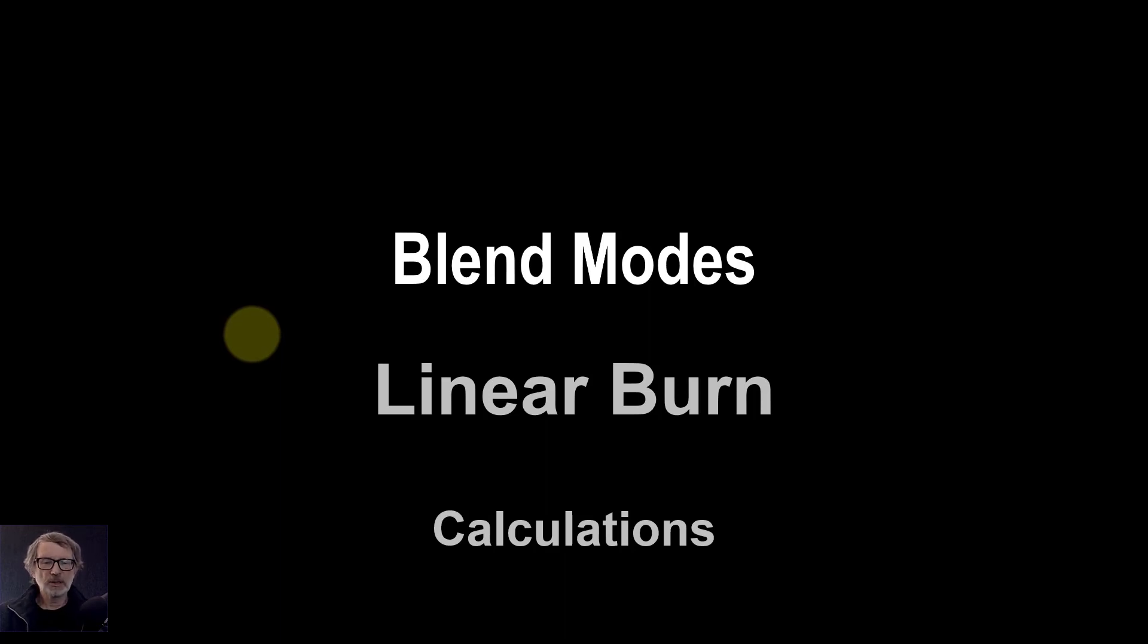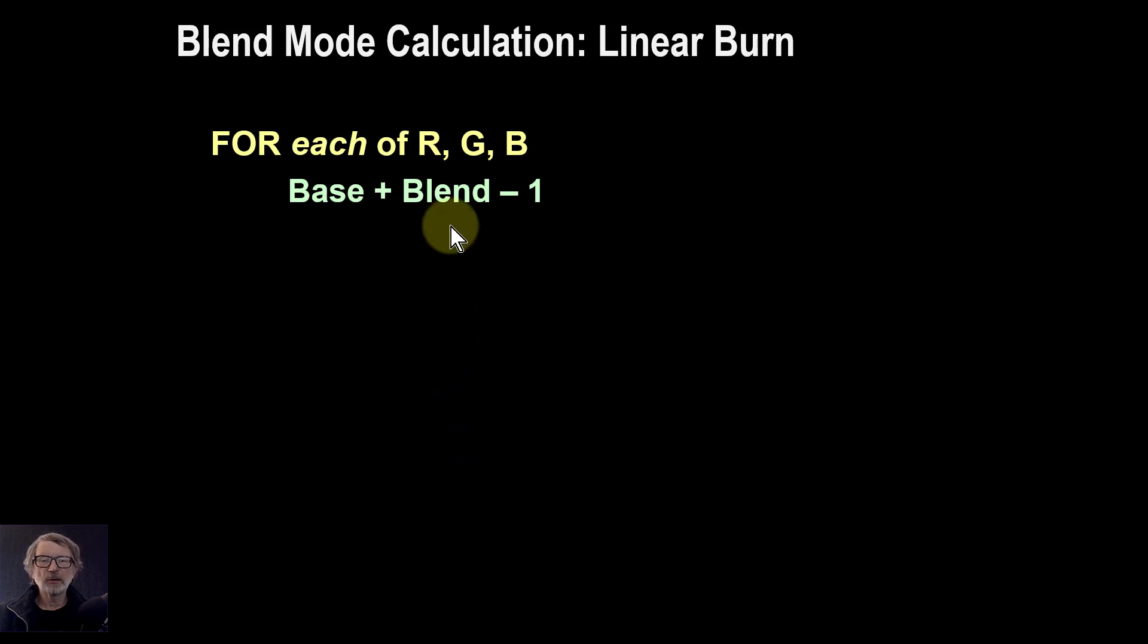So what exactly is this? Let's just go to the calculation. The basic calculation is you take the pixel from the base layer, separate out the red, green and blue, and then for each of those, you're combining with the blend layer red, green and blue, and adding them and then taking away one.